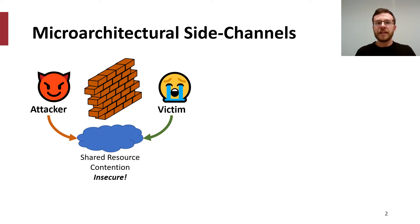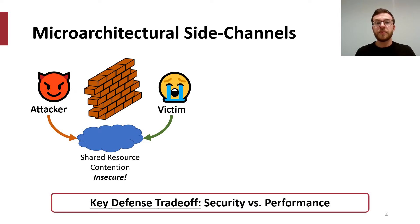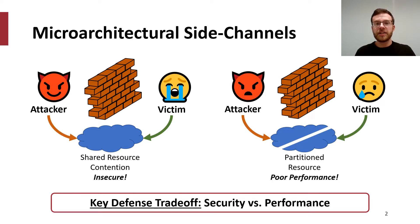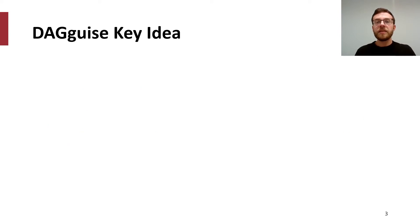In defending against such attacks, there is a key tradeoff between security and performance. While it is initially tempting to statically partition resources to disallow contention, such an approach can significantly degrade overall system performance. In this work, we focus on mitigating side channel attacks which exploit contention within the DRAM memory controller without resorting to static partitioning.